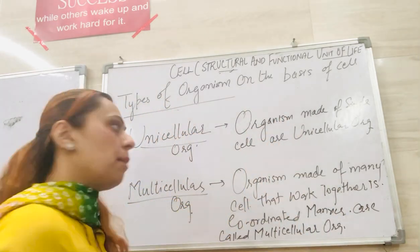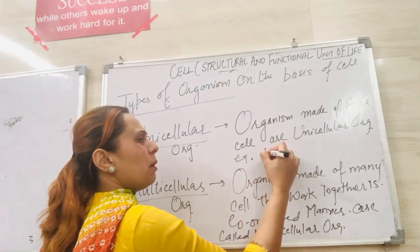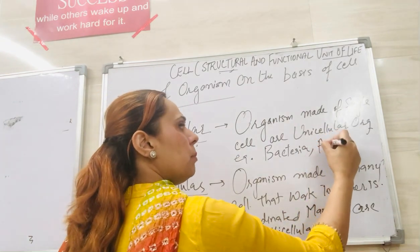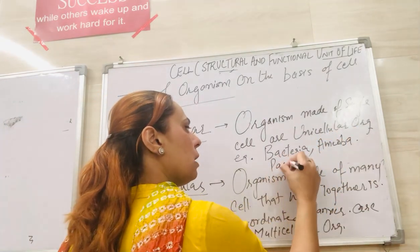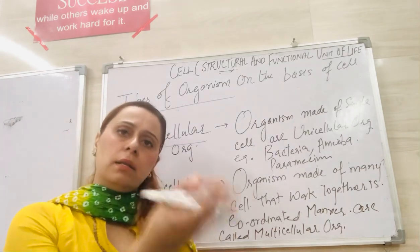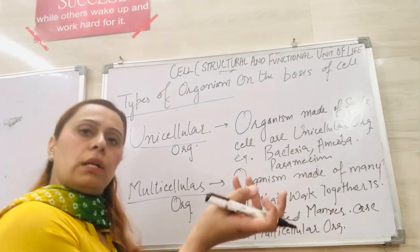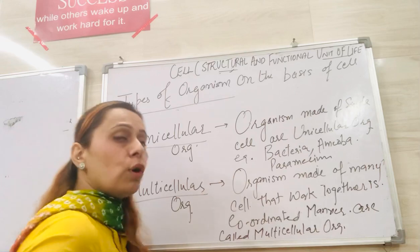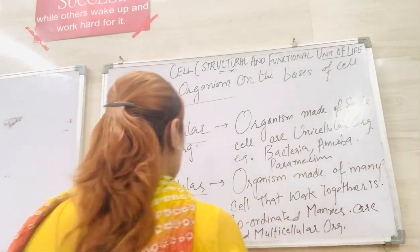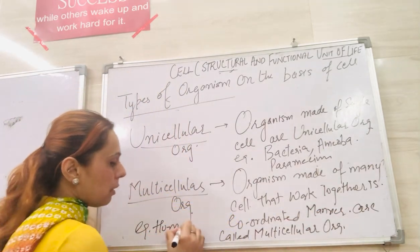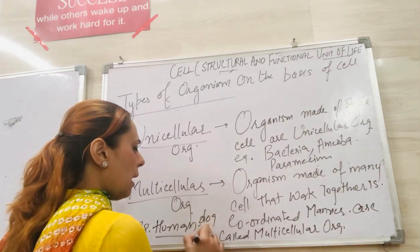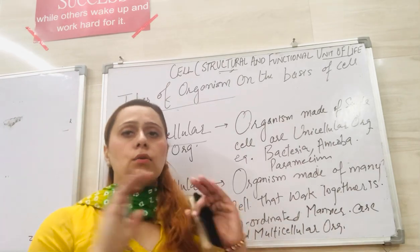A simple example of a unicellular organism is bacteria — all bacteria are unicellular. Amoeba and Paramecium are also unicellular organisms. These organisms reproduce, grow, and take nutrition on their own. Multicellular organisms are made of many cells — humans are a good example, and animals like dogs and cats, or any organism you see around yourself.